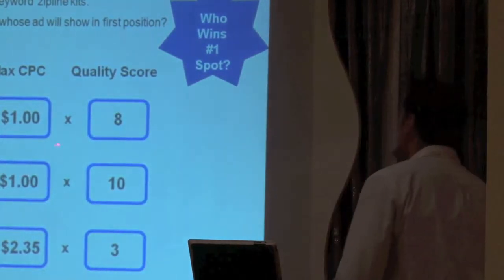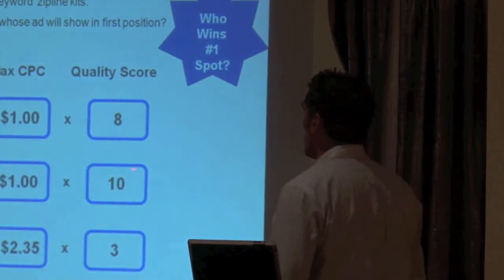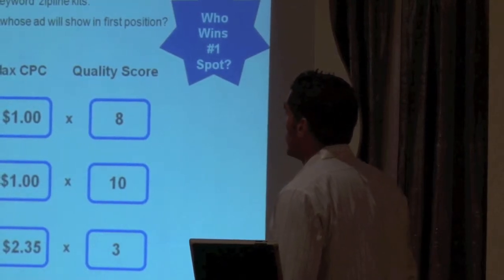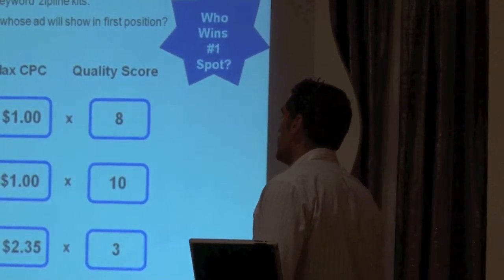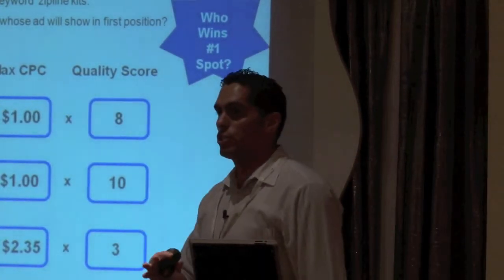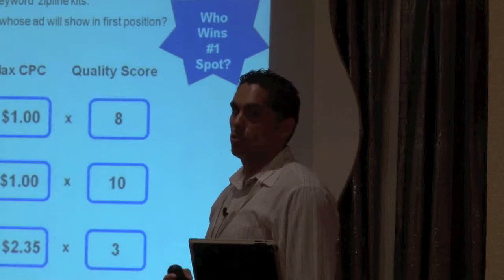Alright, so because Scott has the best quality score and he's willing to pay a dollar, which Allison is also, he gets an ad rank of 10, which is better than Allison and better than John. Very important thing here: there's a way of showing up in the top position without necessarily spending the most amount of money.